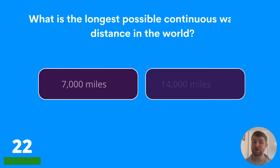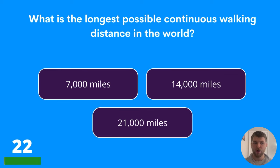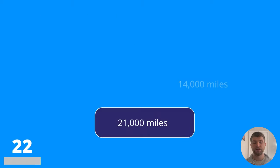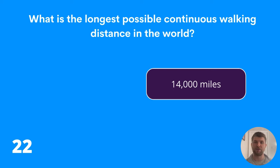Question twenty-two: what is the longest possible continuous walking distance in the world? Seven thousand miles, fourteen thousand miles, or twenty-one thousand miles? The answer is fourteen thousand miles.